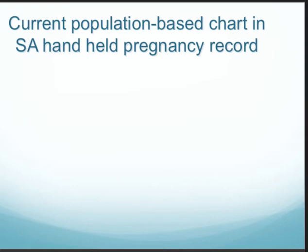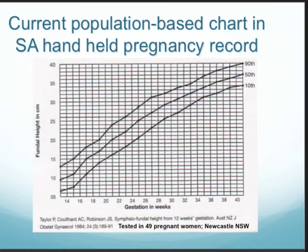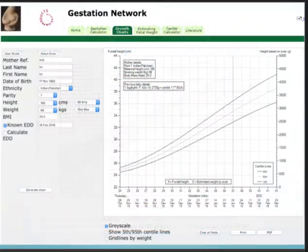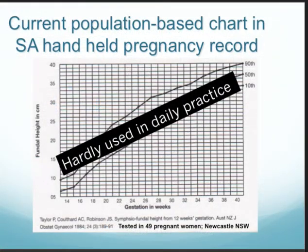If we plot the fundal height measurement on a chart, using the population-based chart as seen in the South Australian pregnancy hand-held record, the detection rate remains poor. This chart was tested in only 49 pregnant women in Newcastle, and it is clear that it is hardly used in daily practice. Hence, it is not very useful.